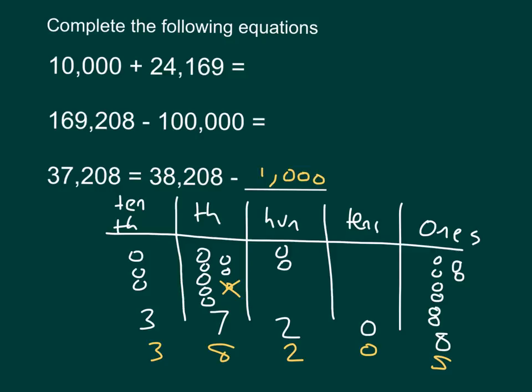In the lesson today, we learned about sums — adding 10,000s, thousands, or even 100,000s — and also about subtracting, finding 1,000, 10,000, or even 100,000 less than a number. We used place value charts to help us think through these sums and differences and understand these numbers more deeply.